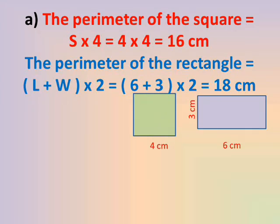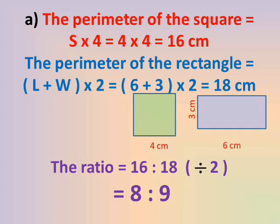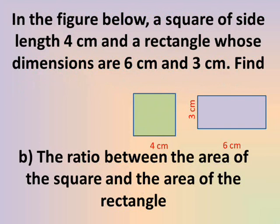That gives 18 cm. The ratio between the perimeter of the square to the perimeter of the rectangle is 16 to 18. Both 16 and 18 are divisible by 2, so we simplify: 16 ÷ 2 = 8 and 18 ÷ 2 = 9. The ratio in simplest form is 8 to 9.